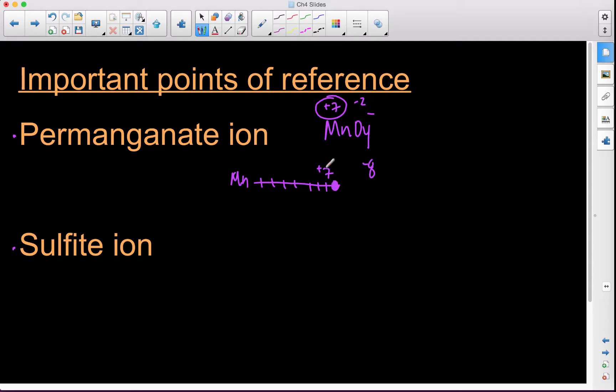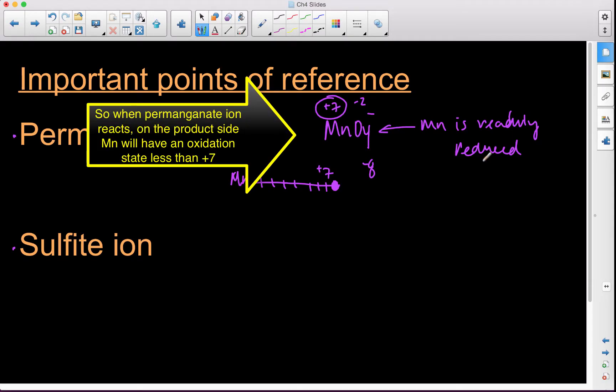Which means it can be plus 1, 2, 3, 4, 5, 6, and then 7 is it. Which means that in the permanganate ion, manganese is readily reduced because it's in its maximum oxidation state. In the permanganate ion, manganese is readily reduced because manganese is in its maximum oxidation state.